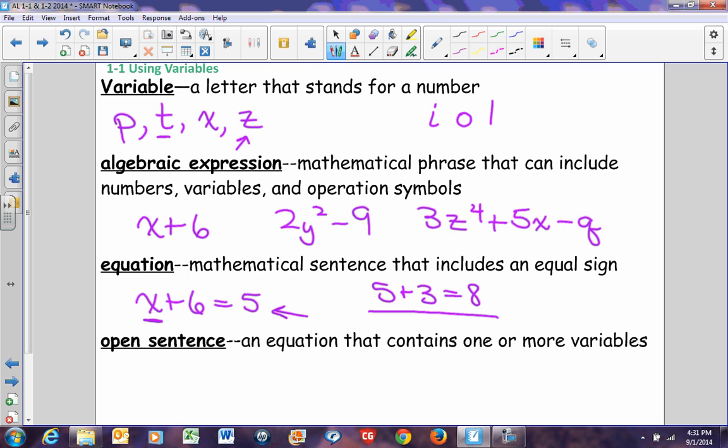But we also see this equation, x plus 6 equals 5. That happens to be an open sentence because until you solve for x or I tell you what x is equal to, you cannot tell me whether it is true or false. Other examples of an open sentence is anything that contains a variable. 3x plus 6 equals 9 is an open sentence because until I tell you what x is equal, you cannot tell me if it's true or false.